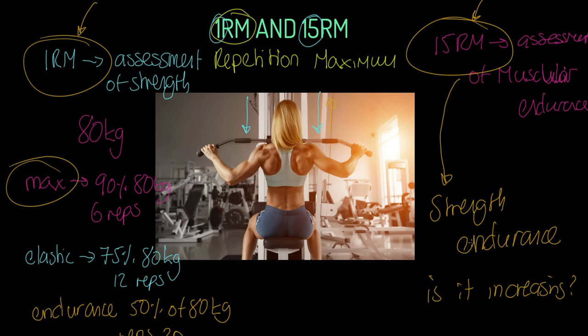The classic mechanism is the one rep max: use 90 percent for max strength, 75 percent for elastic strength, and 50 to 60 percent for strength endurance — with something like 20 repetitions or even to exhaustion. Cheers.